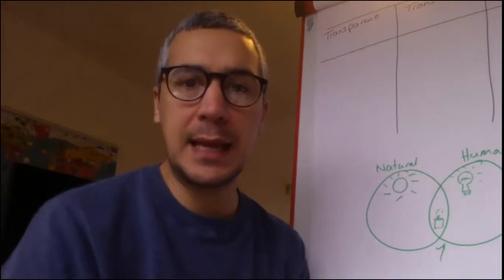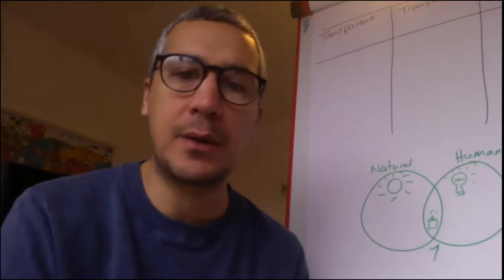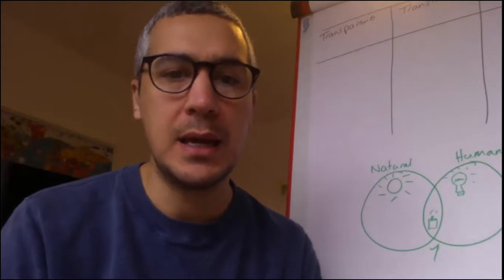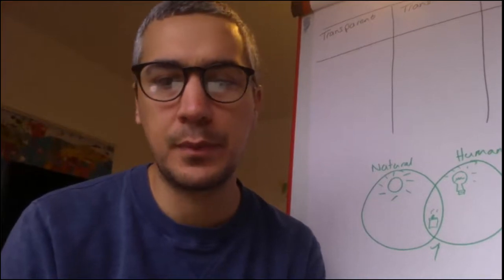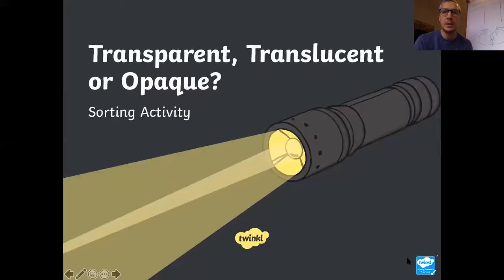Then our second lesson Lola was all about scientific language and technical language so I'm going to run through three words that are really really important for our science topic on light. So we are looking at three words, the first one is transparent which you may have heard of before, then we've got translucent and then we've got opaque.